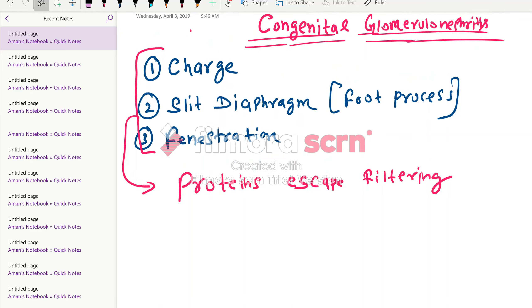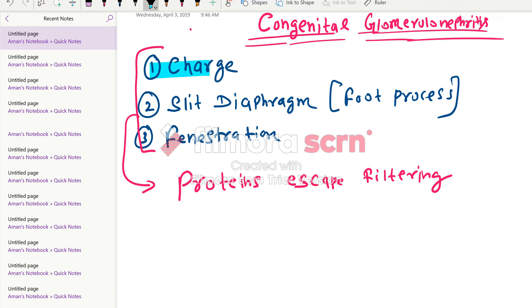First reason is charge. Due to negative charge, they repel each other. Second is slit diaphragm, formed by foot process or podocytes. And the third is fenestration.